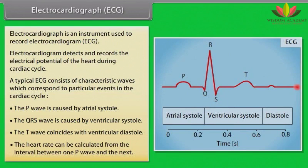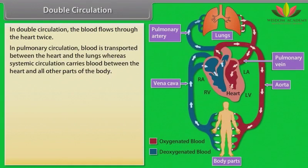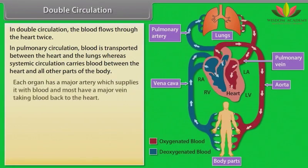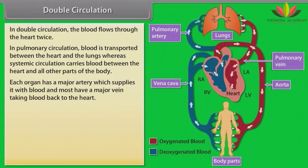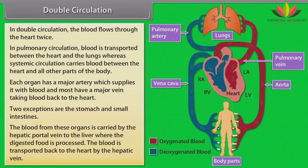Double circulation. In double circulation, blood flows through the heart twice. In pulmonary circulation, blood is transported between the heart and the lungs; in systemic circulation, blood is carried between the heart and all other parts of the body. Each organ has a major artery supplying it with blood and a major vein taking blood back to the heart. Two exceptions are the stomach and small intestines — blood from these organs is carried by the hepatic portal vein to the liver, where digested food is processed. Blood is then transported back to the heart by the hepatic vein.